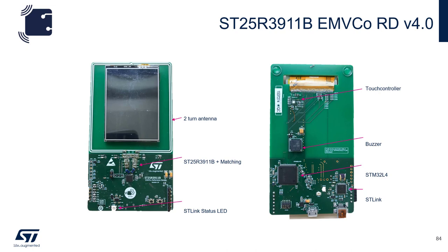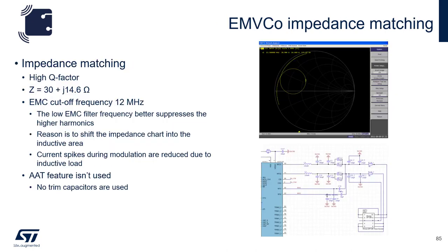The 3911B EMVCO reference design features a two-turn antenna, the 3911B plus its matching, an ST-Link status LED, an LCD screen, a touch controller for the LCD screen, and a buzzer. The board is matched with a high Q factor because the data rate for EMVCO terminals is quite low, capped at 106 kilobits per second. The impedance is matched at 30 ohms and the EMC cutoff filter is set at 12 MHz to reduce higher harmonics produced by the 13.56 MHz carrier and to shift the match into the inductive area. The AAT feature is not used on the EMVCO design.